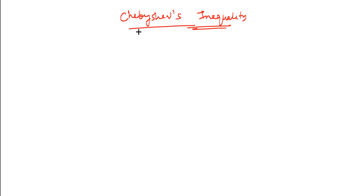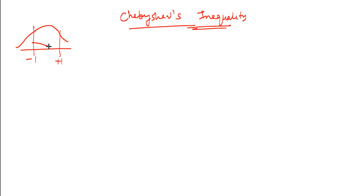In a normal distribution, you know what the area under the curve is — for example, between minus 1 and plus 1 standard deviation from the mean, you can compute the area which comes to 68%. This is known because we know the equation of the normal distribution and from there we can compute the area.